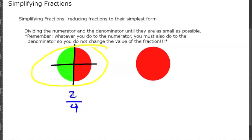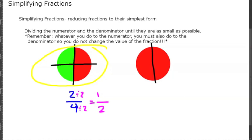Can we divide both of them by two? Yes. Two divided by two is going to give us one, and four divided by two is going to give us two. So, you can see that two-fourths is also equal to one-half. And one-half is the simplest form of two-fourths because there is no other number that we can divide both of these by to make the numerator or denominator smaller.